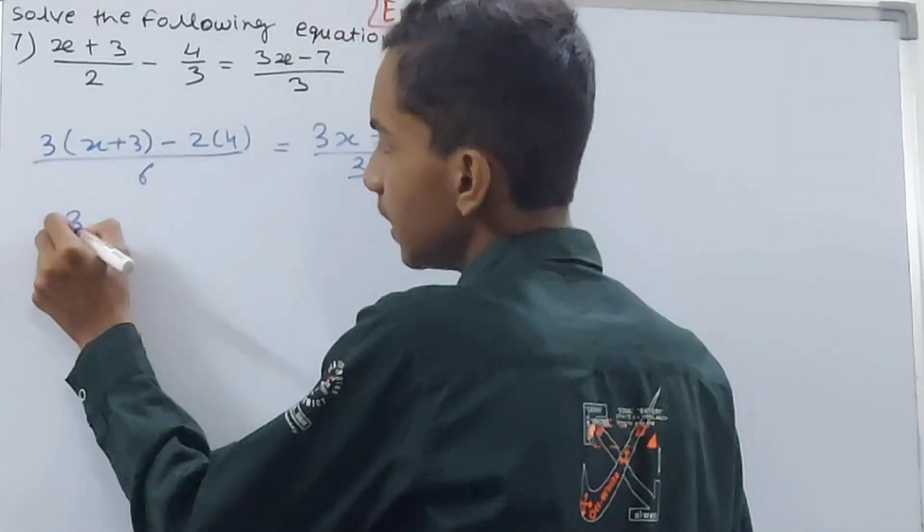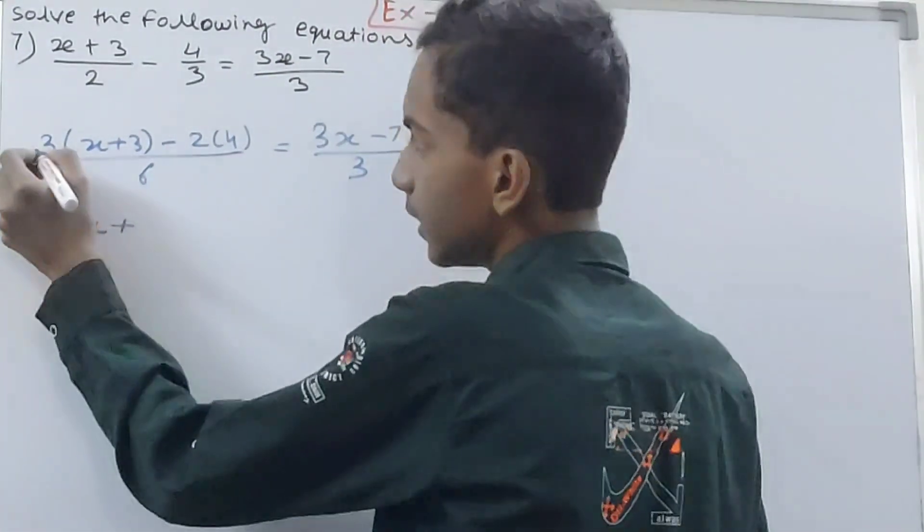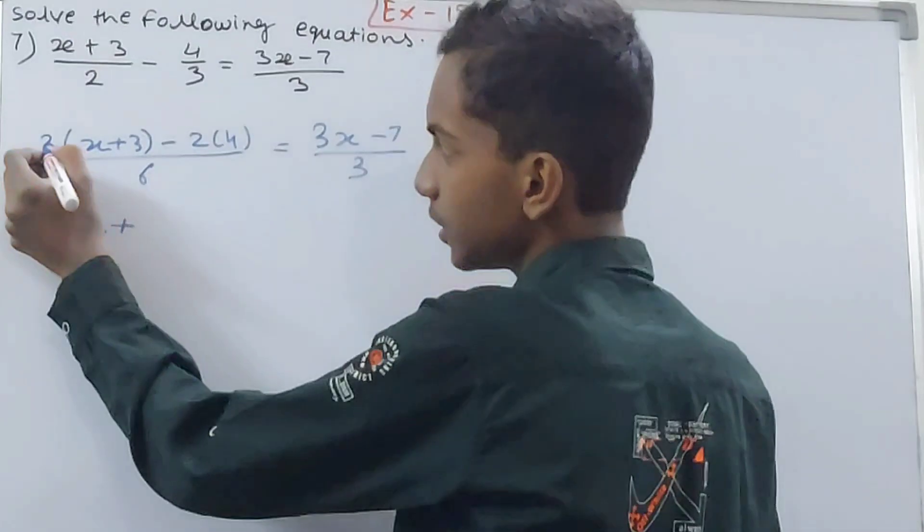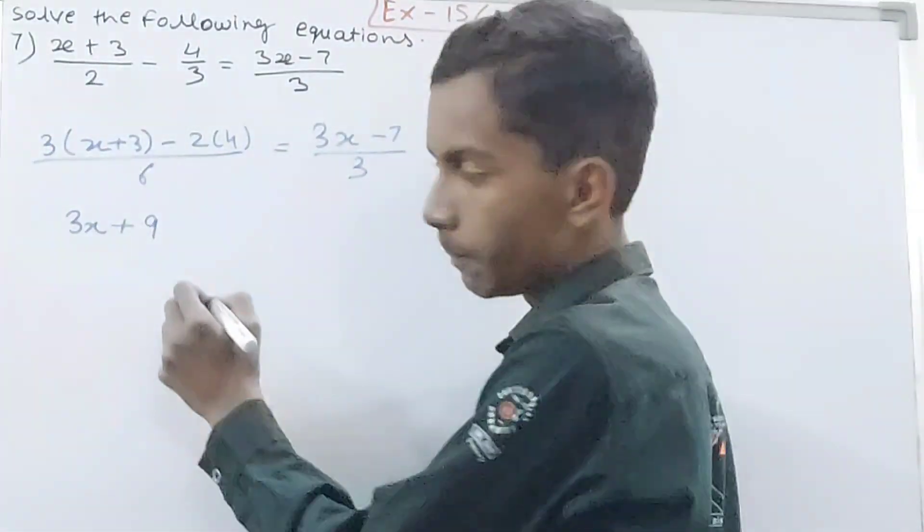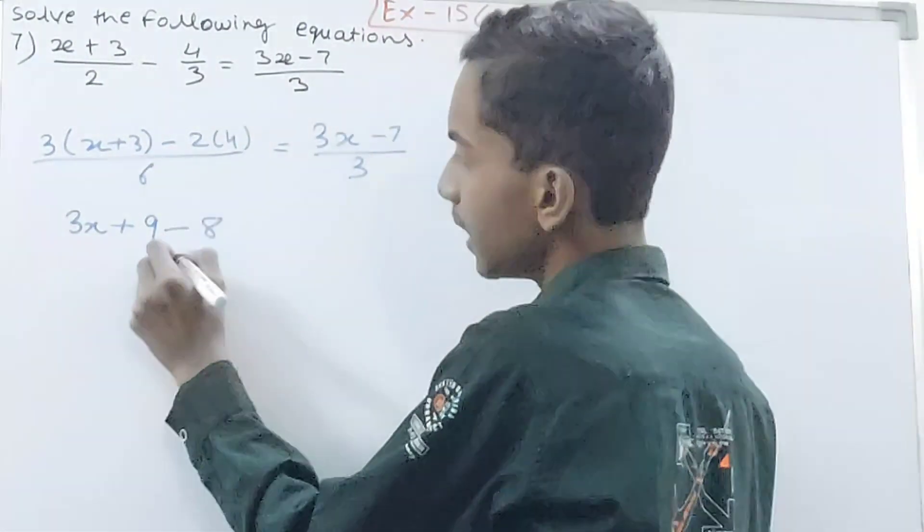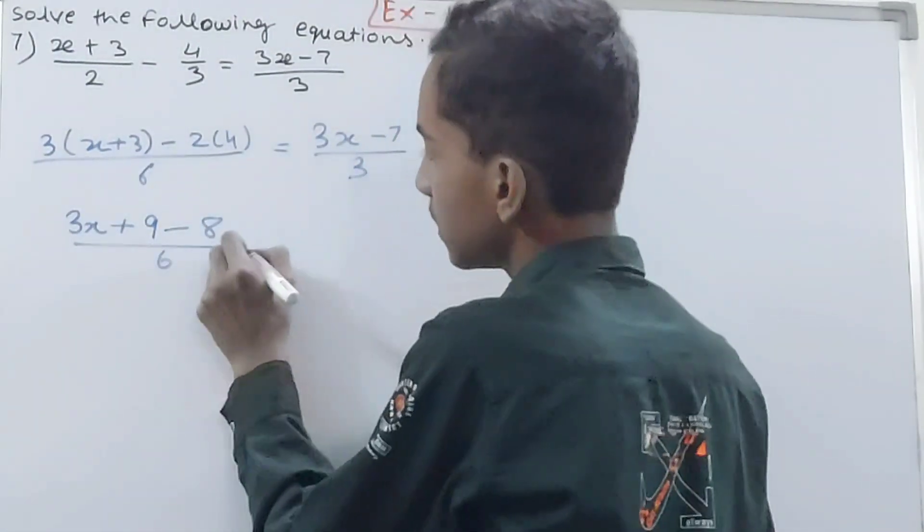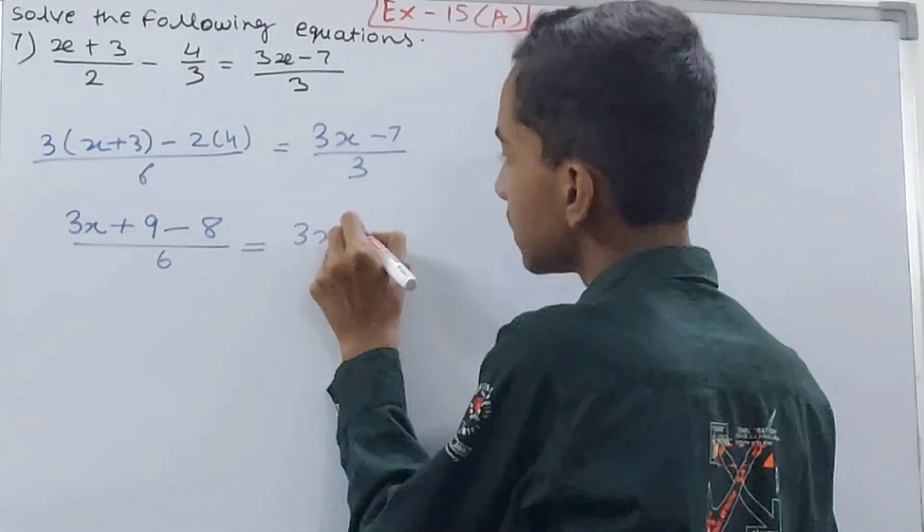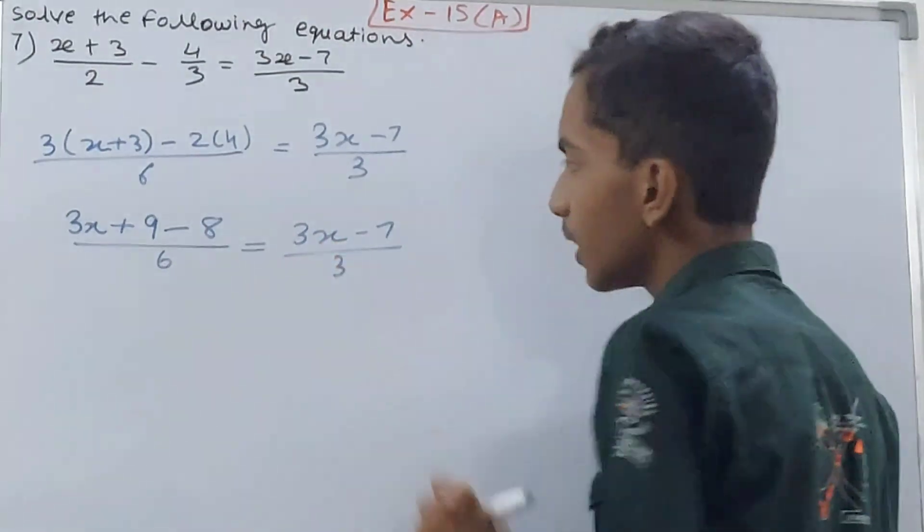So we'll have 3x plus, and 3 into 3 that's 9, right? And minus 2 into 4, that is minus 8 over 6, equals (3x-7)/3. Now what we